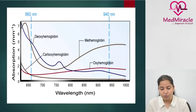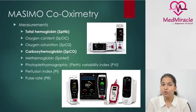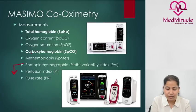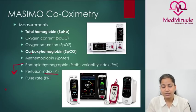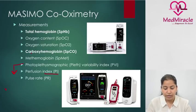Further development led to the Massimo co-oximetry machine, which measures total hemoglobin, oxygen content, oxygen saturation, carboxyhemoglobin, and methemoglobin components separately. It also measures the photoplethysmographic variability index (PVI), which denotes the fluid responsiveness of the patient. There is also a perfusion index showing pulsatile versus non-pulsatile flow. As with co-oximetry, it does not require pulsatile flow only — for example, in patients with sepsis where pulsatility may be low. Pulse rate is also measured.